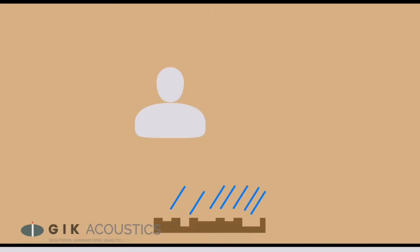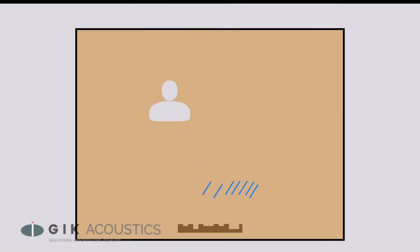The only real downside of classic diffuser designs is that it takes about four to six feet for the scattered sound to fully unfold. This problem often occurs in small rooms where space is tight and an alternative solution must be found.